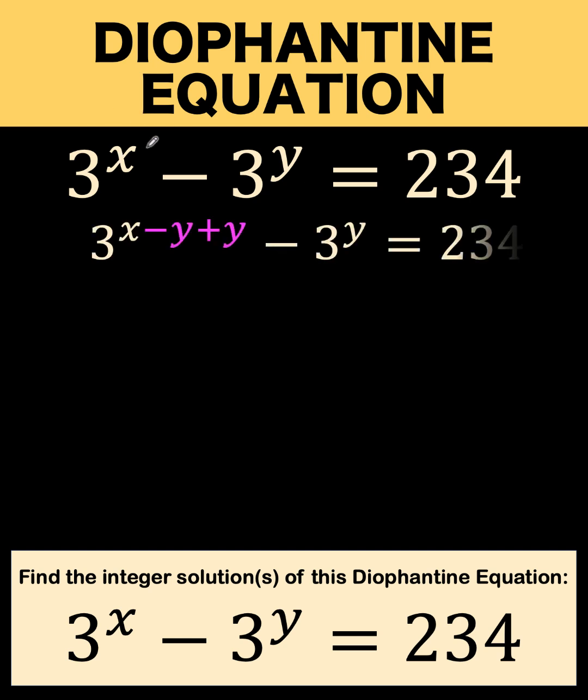Notice that if I'm going to add negative y plus y to this exponent x, I am not changing its value because negative y plus y is just zero. So adding zero to any number will not change the value of the expression. However, this will give us the form where we can express the left side as product of two quantities.